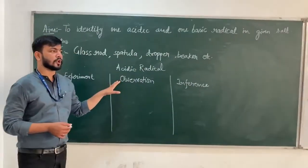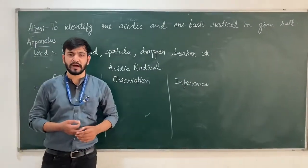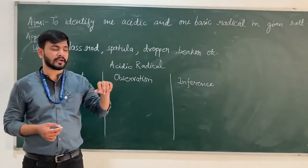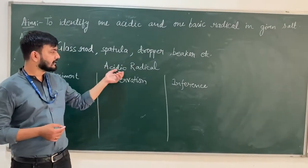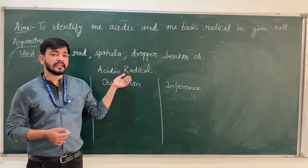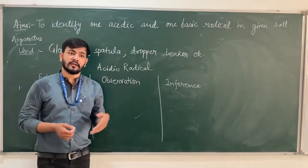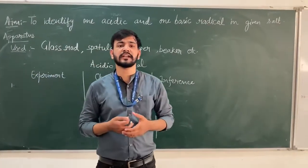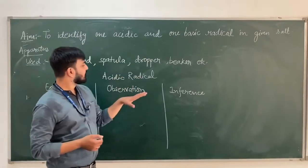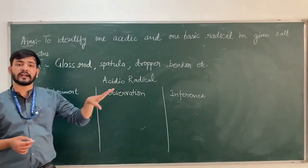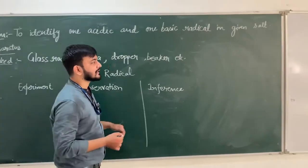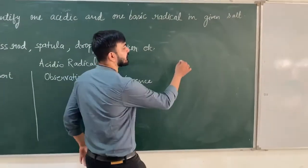As we all know, the salt is comprised of two parts — one is the acidic part and the second is the basic part. Acid radical means anion. Now, there are so many anions, so to figure out which acidic radical is present in the salt, the process is divided into three parts.